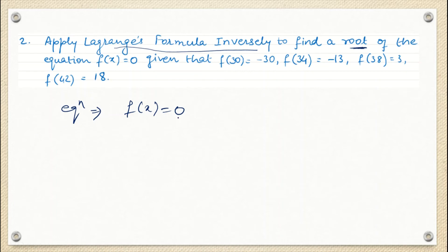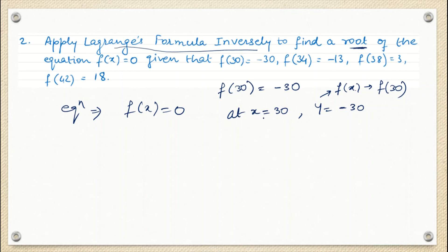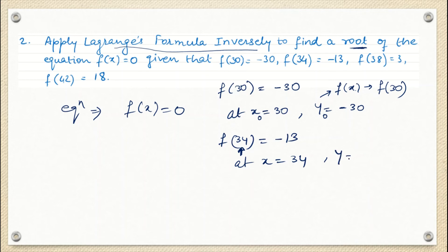So the data they have given: f(30) = -30 means at x = 30, y = -30. You can write x-naught = 30, y-naught = -30. Similarly, f(34) = -13 means at x = 34, y = -13, which is x1 and y1.